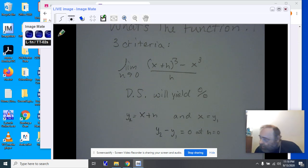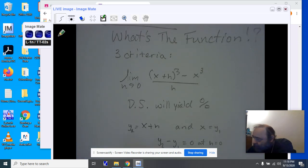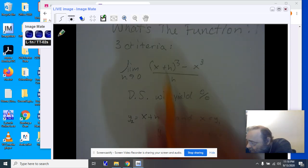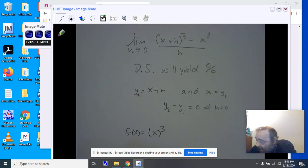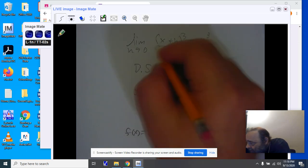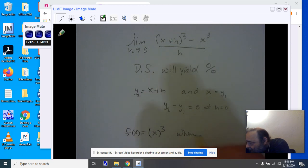So what we're doing is we're then saying there has to be a function. And that function is what we end up with when we yield zero. Now if you look at this one, what's going to yield zero? x the quantity cubed. This is our f(x). And the value that we are plugging in, when h equals zero, we get the value of a for the limit.